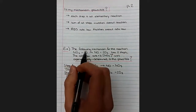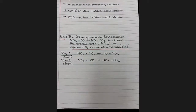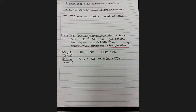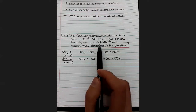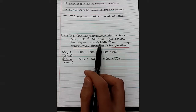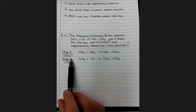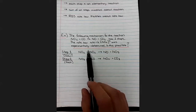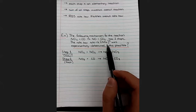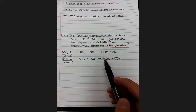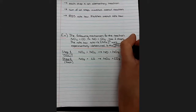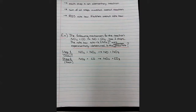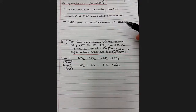So let's see if we can use these skills in an example. Pause the video here and write this problem down before we get started. The problem says the following mechanism for this reaction — NO2 plus CO goes to NO plus CO2 — has two steps, labeled as step one slow and step two fast. The rate law, rate equals K times the concentration of NO2 to the second, was experimentally determined. Is this mechanism plausible? We have our three checks, and we're going to go through each of them for this proposed two-step mechanism.